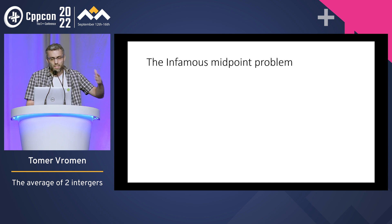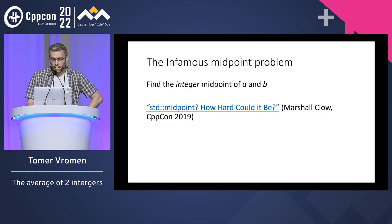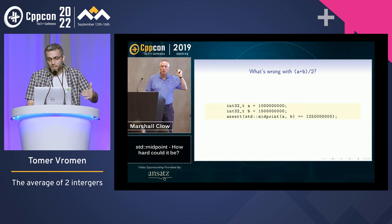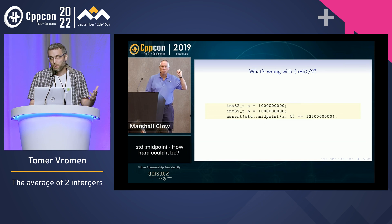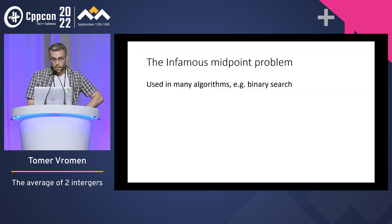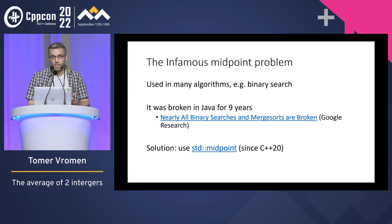Some of you are probably saying, oh, this is the infamous midpoint problem — where you find the integer midpoint between A and B, and someone named Marshall showed it three years ago here. That guy looks familiar, right? Basically, if you do the obvious thing — add A to B, divide by two — and A and B are big numbers, you get an overflow. Technically it's undefined behavior; practically you get the wraparound and the wrong result, and that's bad. It's really important, it's used in many algorithms. It was broken in Java for nine years, and for us the solution is just to use std::midpoint.